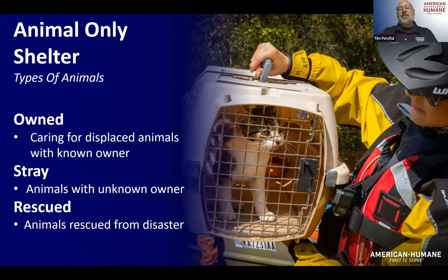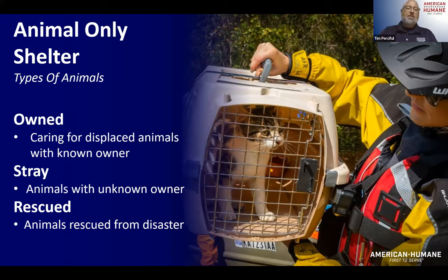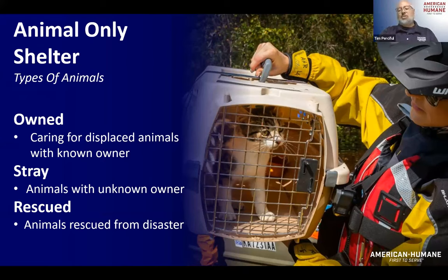Animal-only shelters can handle all these different types of animals. They can also have all different kinds of species — dogs, cats, your typical household pets, but also large animals like cattle, equine, llamas, geese, ducks, and whatever else. An animal-only shelter is probably still one of the most common types of shelters out there.